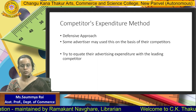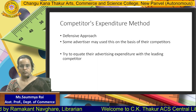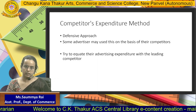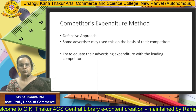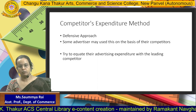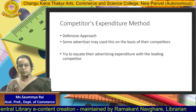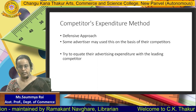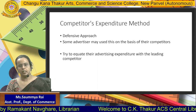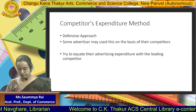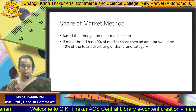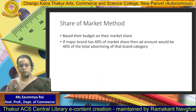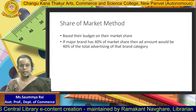Competitor expenditure method, also called the defensive approach: advertisers use their competitors as a basis for the advertisement budget — what competitors are doing, how they are advertising, and how much they are spending. They try to match their advertisement expenditure with their leading competitors, basing their decisions on what competitors spend and where. Market share method: the budget depends on the market share. More share means more advertisement budget. If a brand holds 40 percent market share, 40 percent of the total advertisement budget will go to that brand.